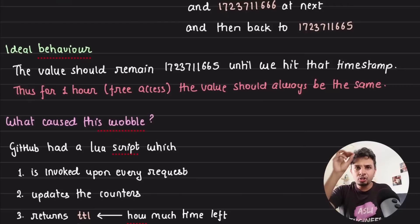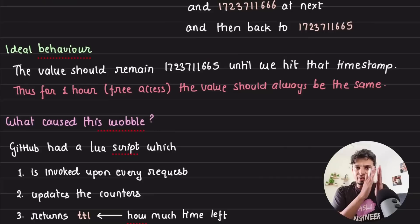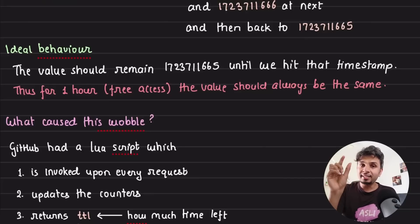And the ideal behavior would have been that no matter what happens, the value should always be 1723711665. That's what it should be. Until that next one hour happens, the value should not change. Obviously, because why should it wobble? And that is the ideal behavior. Now what caused this wobble? And this is where you would absolutely love what happens, where every second matters.